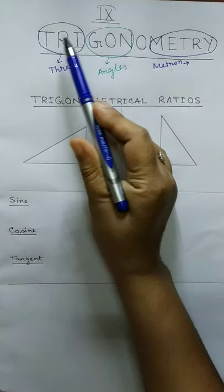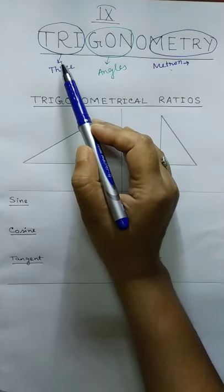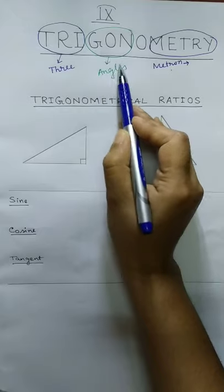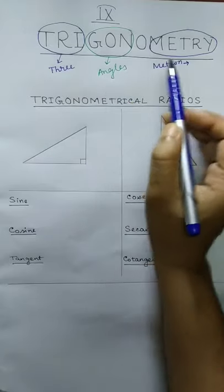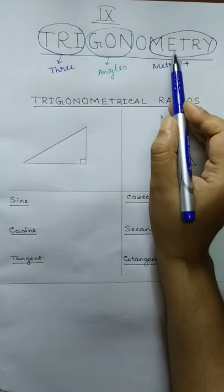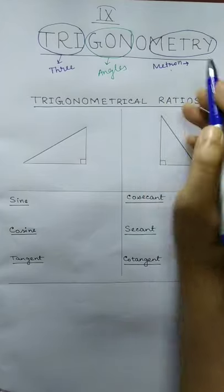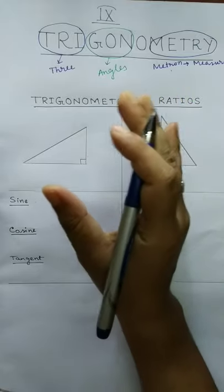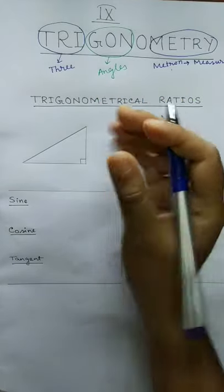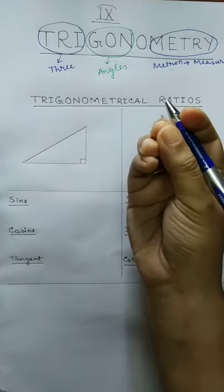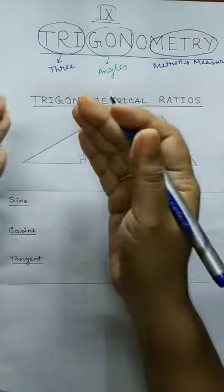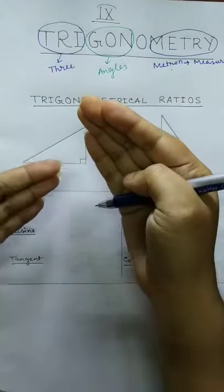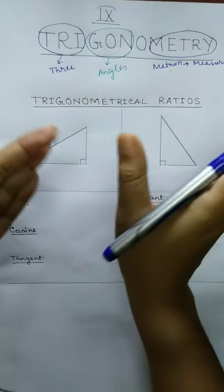First, I have rounded up TRI — these three letters mean 3. Next is GON, which means angles. And the third part is METRI, specifically coming from METRON, which means measurement. So trigonometry is the study of three angles — the measurement of those angles with their sides, the study of sides and angles.